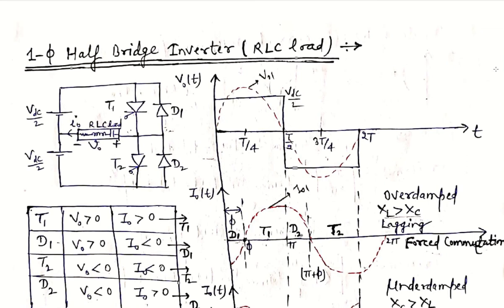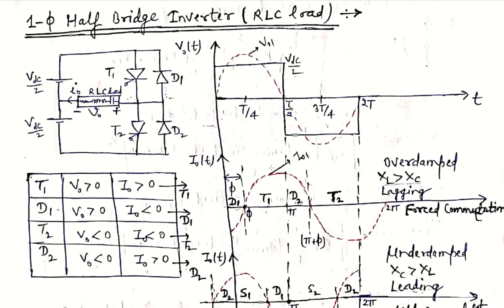The switching logic table is the same for any kind of load — R, L, RL, or RLC loads — so it is same as in previous cases. Now we will see what is the output current nature, since the voltage waveform remains the same.